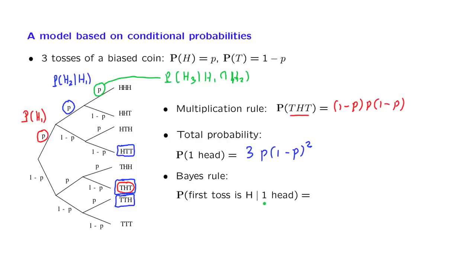Suppose we are told that there was exactly one head, so the blue event has occurred. We are interested in the probability that the first toss is heads, which corresponds to the green event. Given that the blue event happened, what is the probability that the green event happens? You can guess the answer should be one third, because each one of the blue outcomes has the same probability, so the conditional probability of each one should be one third.